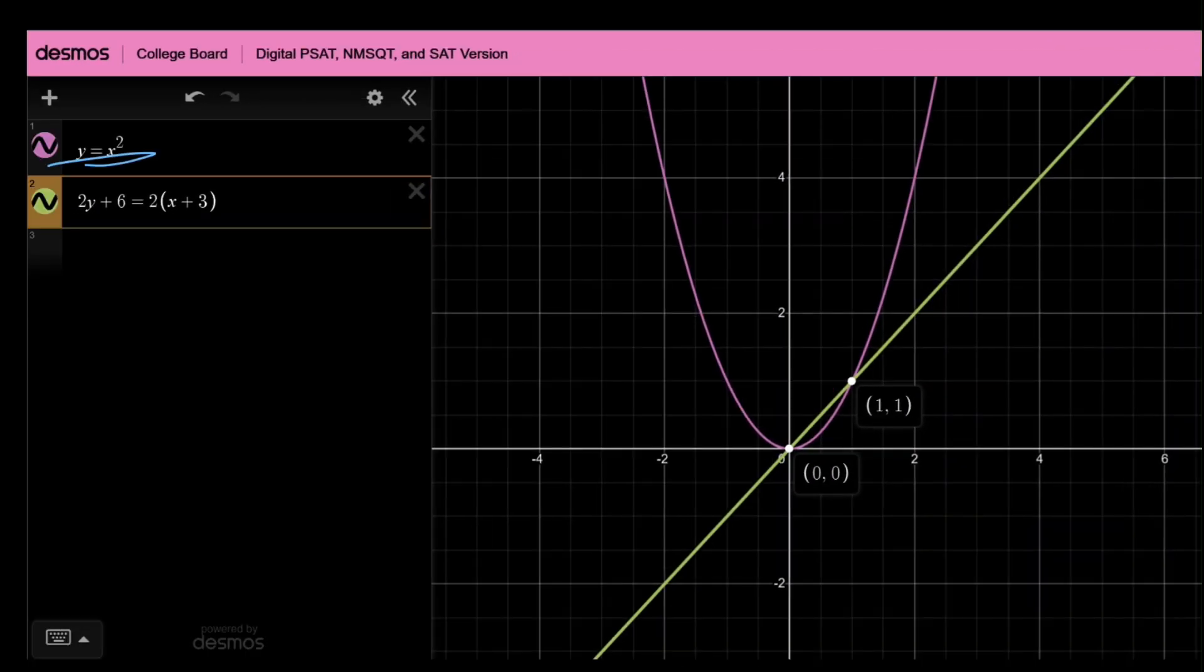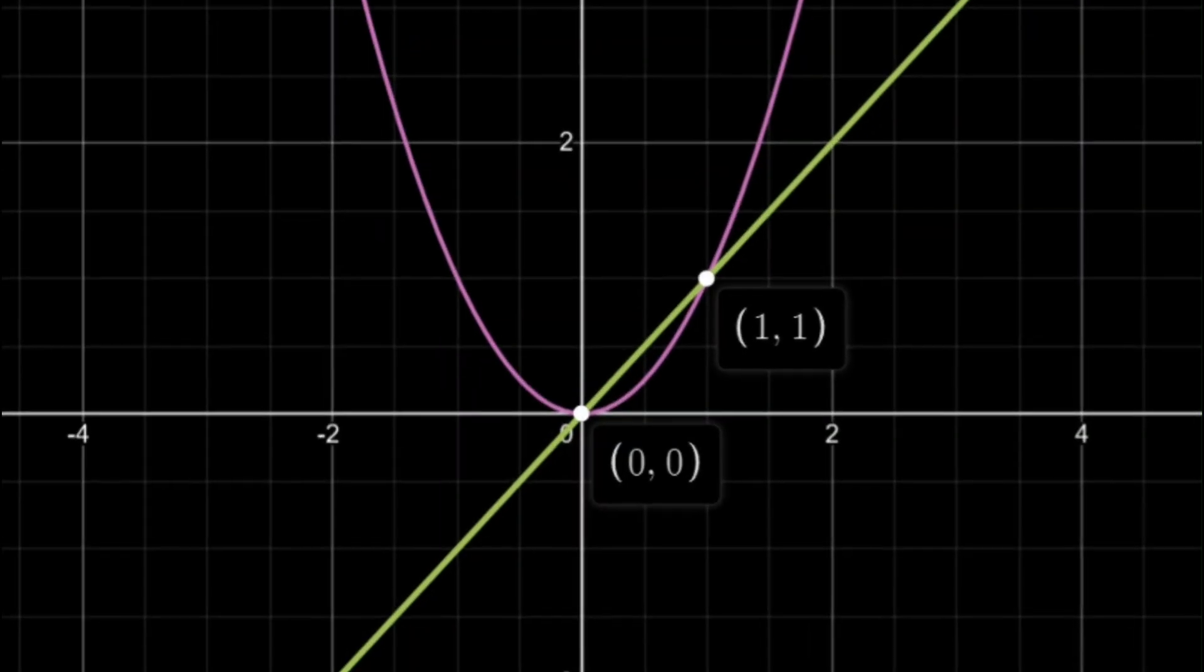I've already done this for us here. Two equations here, I just graphed them up, and then we have our two intersection points.